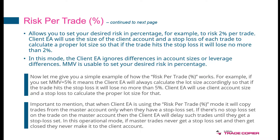Client TA will use the client account size and the stop loss to calculate the proper lot size. It's very important to mention that in this mode, Client TA will copy trades from the master account only when they have a stop loss set. If there is no stop loss on the master trade, Client TA will delay those trades and won't copy them until they get a stop loss. If master trades never get a stop loss set and then get closed, they never make it to the client account.